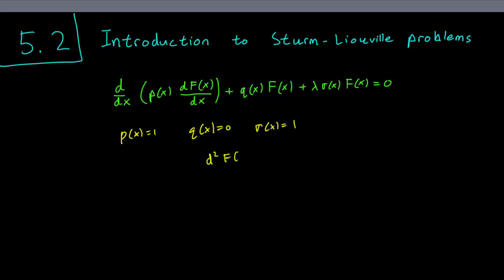Since q(x) is 0 and sigma(x) is 1, we're just left with the second derivative of F plus lambda F(x) equals 0. So our usual boundary value problem is covered under the Sturm-Liouville problems—it's a special case.